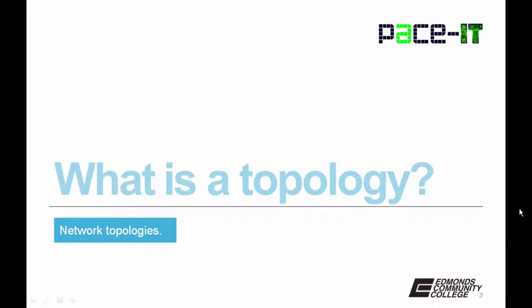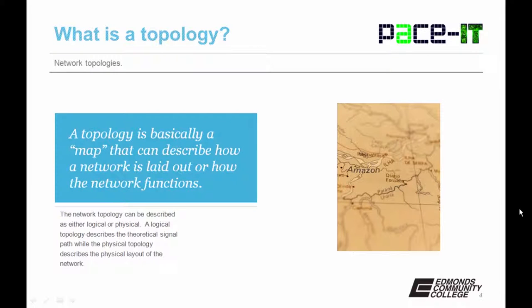So what is a topology? A topology is basically a map that can be used to describe how a network is laid out or how a network functions. A network topology can be described as either being logical or physical. A logical topology describes the theoretical signal path, while the physical topology describes the physical layout of the network. You should know that a logical and physical topology don't need to match.